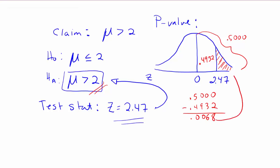That means this area is 0.0068, that is our p-value. So the conclusion then for this problem is that we should reject the null hypothesis since the p-value is less than alpha, we reject H0.